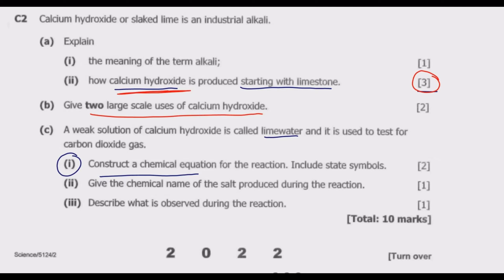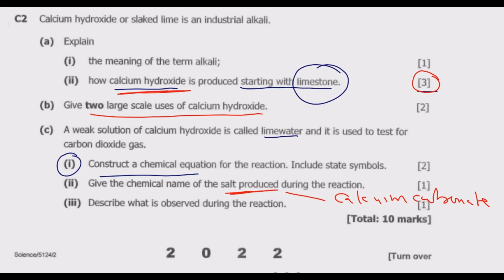Part two: give the chemical name of the salt produced during the reaction. The salt produced is calcium carbonate. Note that calcium carbonate is the same as the limestone we started with at the top of this question.